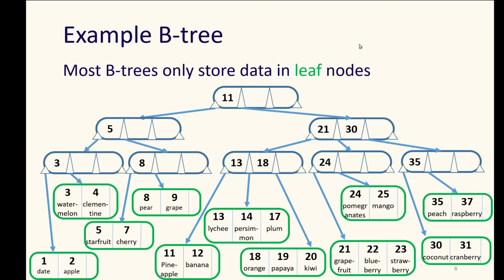So most B trees will only store the actual data in the leaf nodes so that the leaves are all of the actual files or database records or whatever that we might look up. And we can just look up that chunk of files or database records by getting to those leaf nodes down there. This is an example of a B tree. They will make a little more sense when we get into talking about the details of a 234 tree.